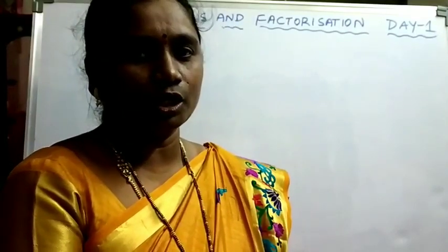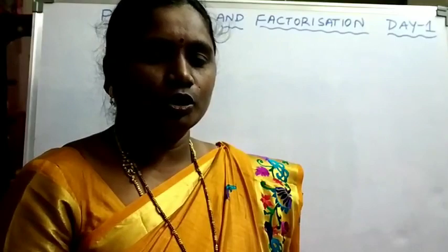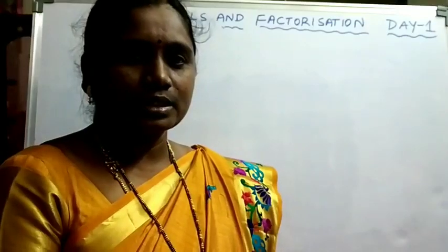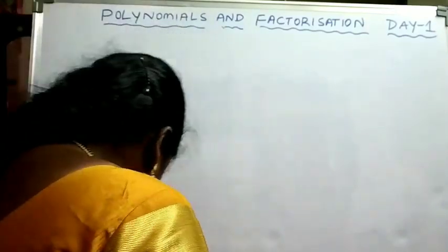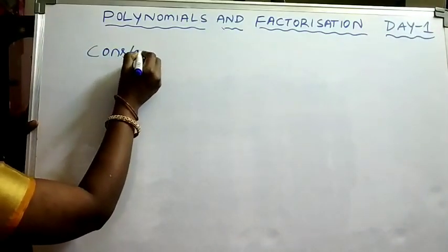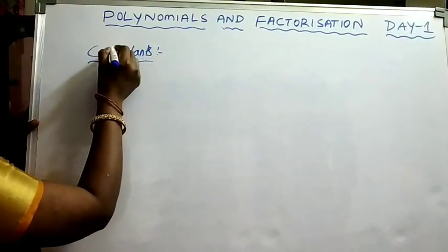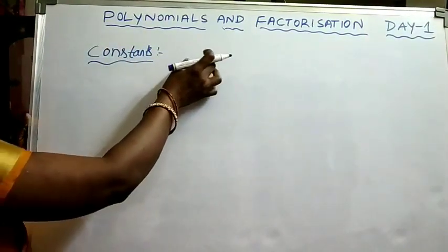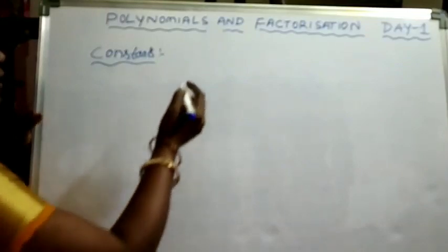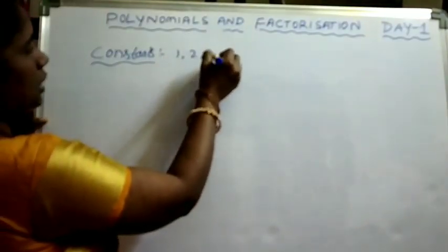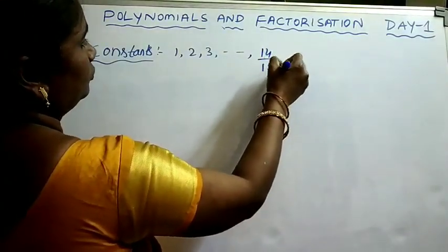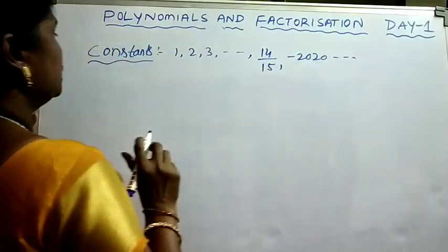In this class we will learn about polynomials. Before going to learn about polynomials, we will recall some terms like constants, variables and expressions. You all know all these terms. So let us recall: what are constants? Constant means it has a fixed value — its value will not be changed anywhere. For example, the numbers which we use in our daily life are constants.